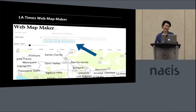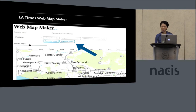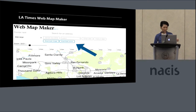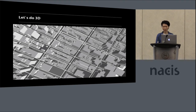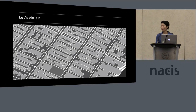Since vector graphics don't lose resolution, they are often used for print making too. For example, LA Times has been making a web map maker to easily generate snapshots of maps for their articles. They wanted to use the map maker for their print publication too, but printing requires a vector format. So they adopted some parts of the SVG Exporter, using it for printing. We've talked about 2D fabrication so far. Now let's talk about 3D fabrication.